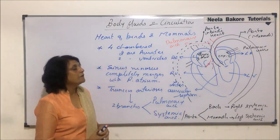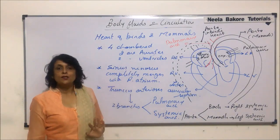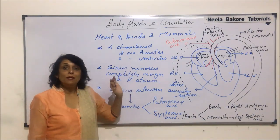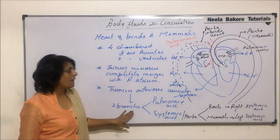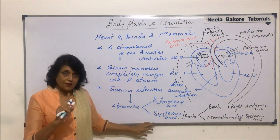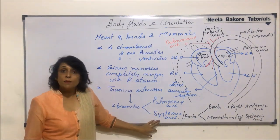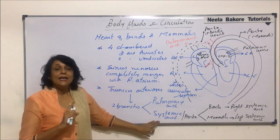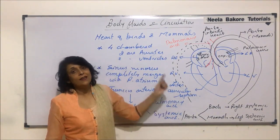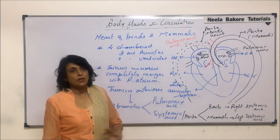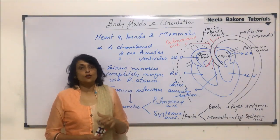So, except for one difference, the heart of birds and mammals is the same: four compartments, total separation of oxygenated and deoxygenated blood, sinus venosus completely lost — it has merged with the right auricle — and truncus arteriosus also lost, divided into two arches: one pulmonary and one systemic. The pulmonary arch is the same in both birds and mammals. The systemic arch is again only one, but in birds it goes on the right side and in mammals on the left side — right systemic arch versus left systemic arch. Otherwise, the structure is all the same. In the next segment, we will take up the actual structure of the human heart.